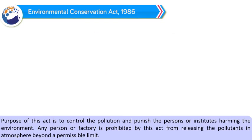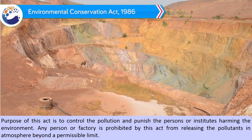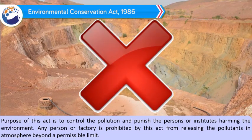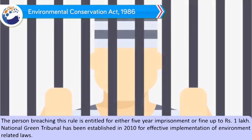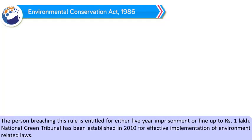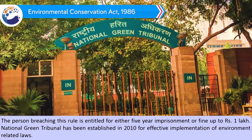Environmental Conservation Act 1986: The purpose of this act is to control pollution and punish persons or institutes harming the environment. Any person or factory is prohibited by this act from releasing pollutants into the atmosphere beyond a permissible limit. The person breaching this rule is entitled to either 5-year imprisonment or a fine up to Rs. 1 lakh. The National Green Tribunal was established in 2010 for effective implementation of environment-related laws.